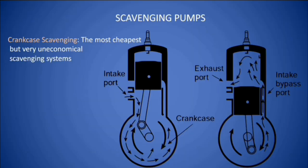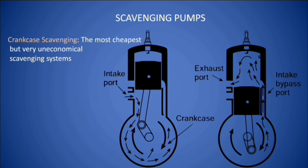In a two-stroke engine, a piston cannot carry out the pumping action, so an additional pump — called a scavenging pump — is required to supply scavenging air to the cylinder. Crankcase scavenging is the cheapest pumping system but is very uneconomical. It compresses incoming air and transfers it to the cylinder; however, the delivery ratio is very low and the engine output is limited because only 40 to 50 percent of the cylinder volume is transferred through the transfer port.